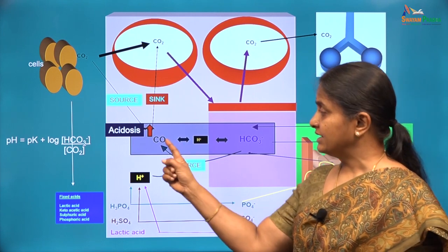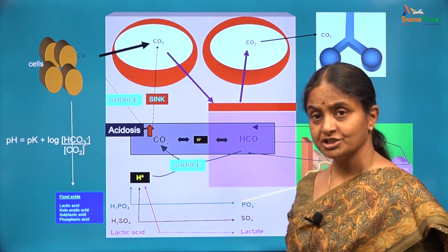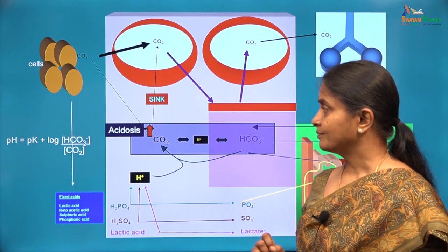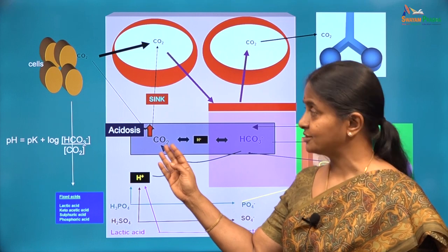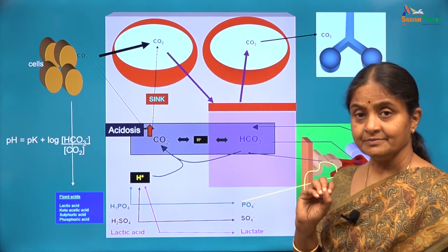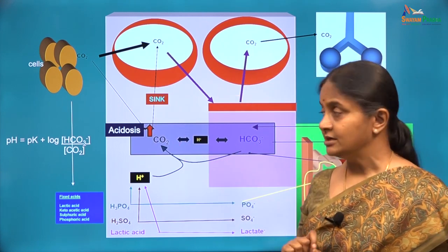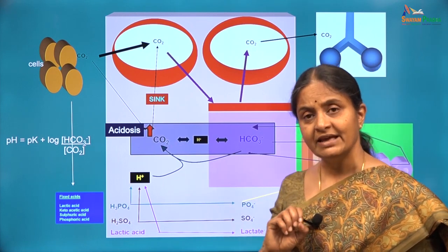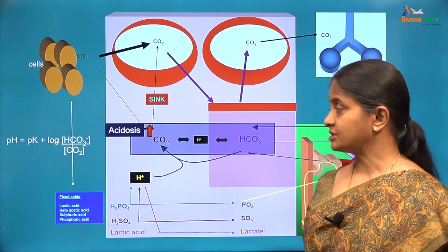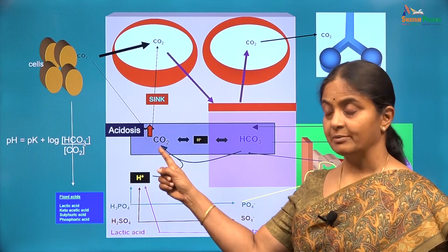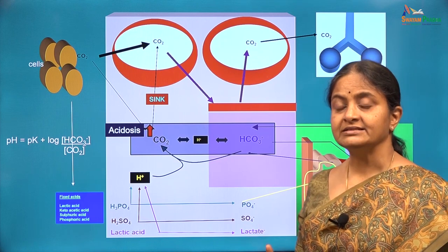The question is whether an increase in carbon dioxide is brought about by increased formation from the sources. The answer is no, because whatever carbon dioxide is formed from these sources, if the removal system is normal, then whatever is formed can be adequately handled. So increased formation of carbon dioxide is never a cause for increase in plasma carbon dioxide. The only cause for an increase in plasma carbon dioxide is when the removal mechanism is inadequate.